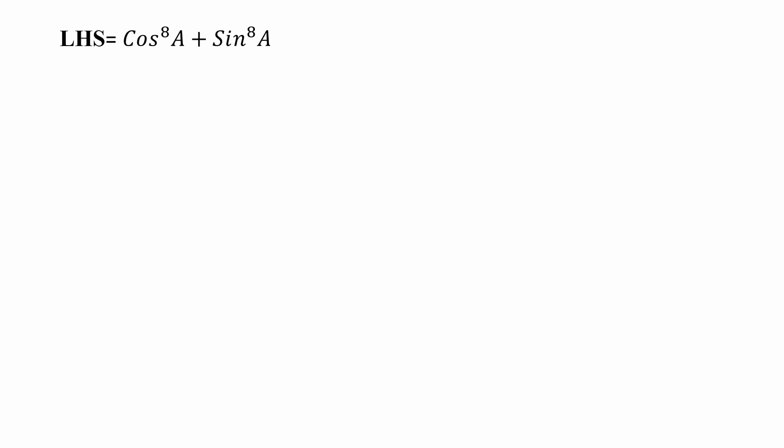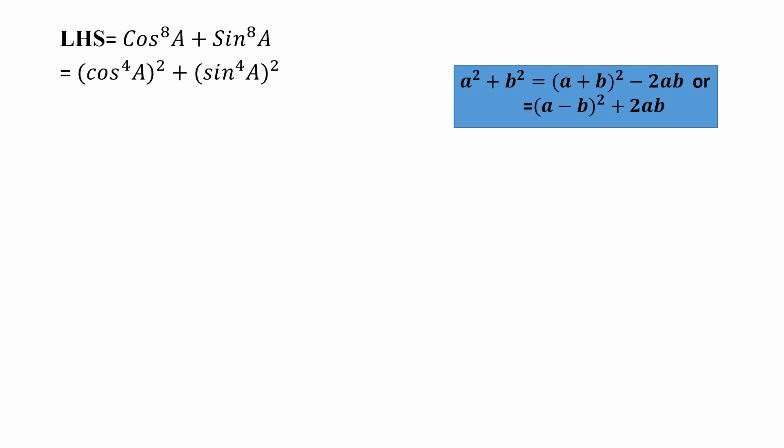Here is our LHS. The expression is cos⁸a + sin⁸a. We can express the power 8 as (cos⁴a)² + (sin⁴a)², according to the law of indices. Now it is in the form of a² + b². We have two formulas: a² + b² = (a+b)² - 2ab, or (a-b)² + 2ab. The suitable formula here is the first one, so we apply a² + b² = (a+b)² - 2ab.